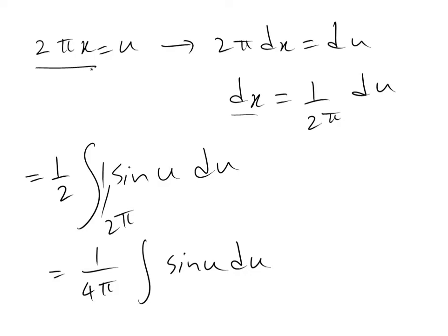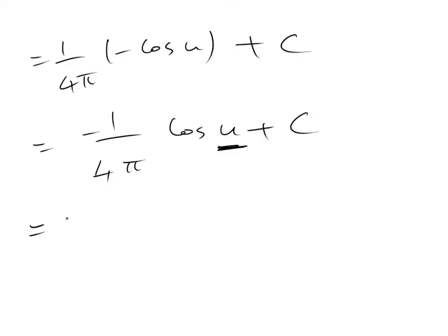By the definition of u, which is equal to 2 pi x. So you write here minus 1 divided by 4 pi times cosine, instead of u, I write 2 pi x plus c.